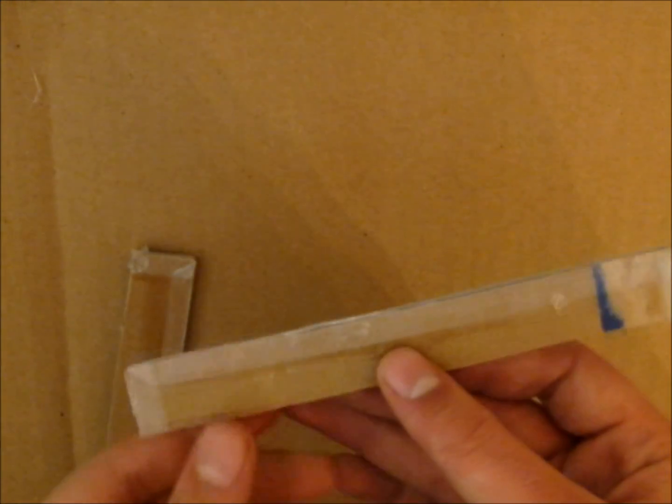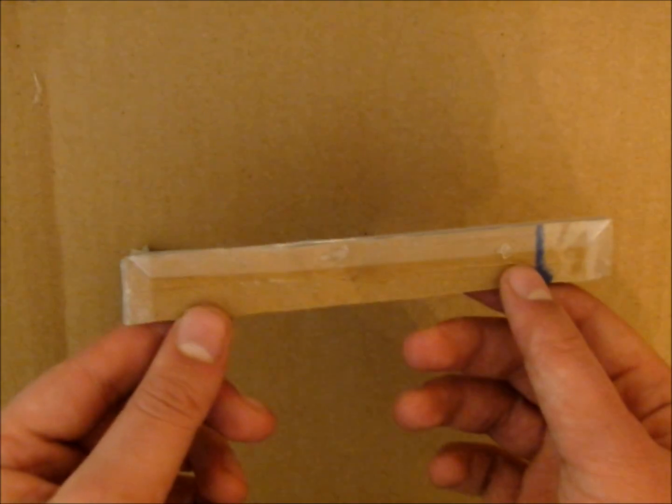Repeat this process with the two six-inch pieces. However, only three sides need to be covered.